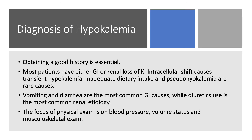How do we make the diagnosis? On any chemistry profile, we're going to get potassium. Once we make the diagnosis and know that potassium is below 3.5, we need to determine the etiology — why the patient is hypokalemic. Most patients with hypokalemia either lose potassium through the GI tract or through the kidneys. Pseudo-hypokalemia is not common, and redistribution causes like albuterol or insulin cause only transient shifts, not chronic hypokalemia. So our focus is on renal loss or GI loss.